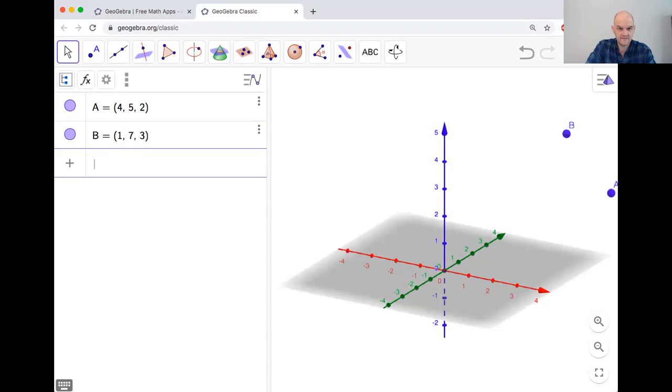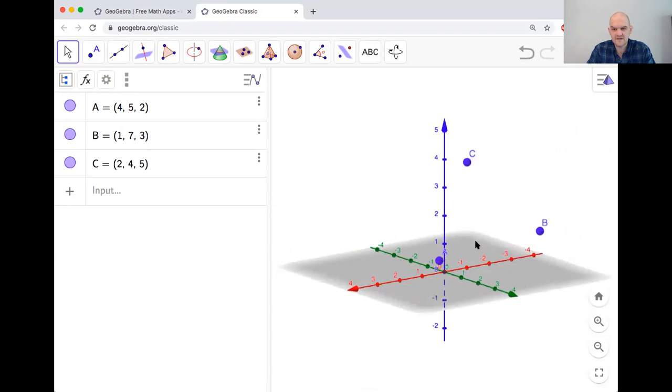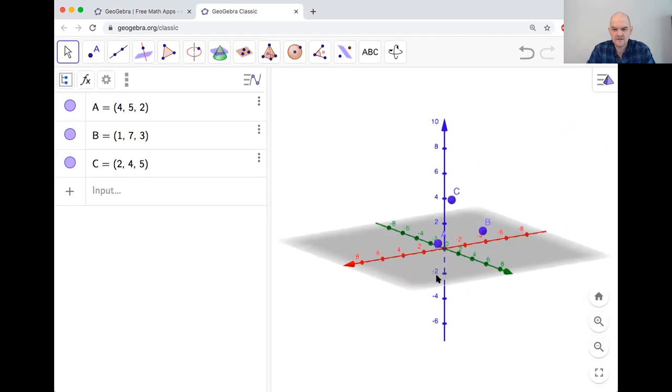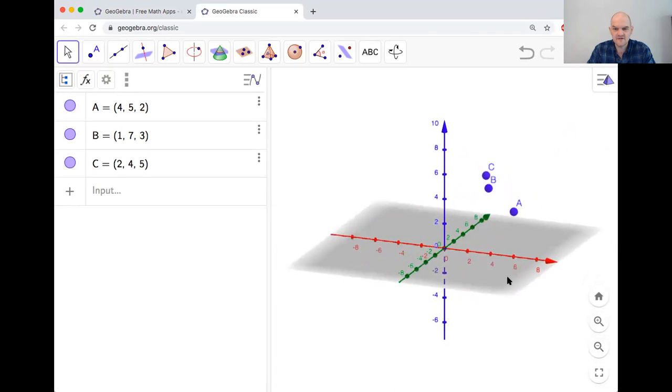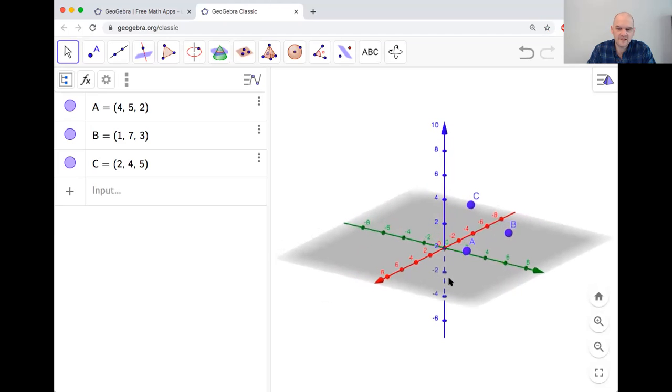Click this so that you can see this input and get all these things in the event that you need them. What you do need is to be able to see the settings for this particular line. I'm going to plot the points (4,5,2), then (1,7,3), and then (2,4,5).